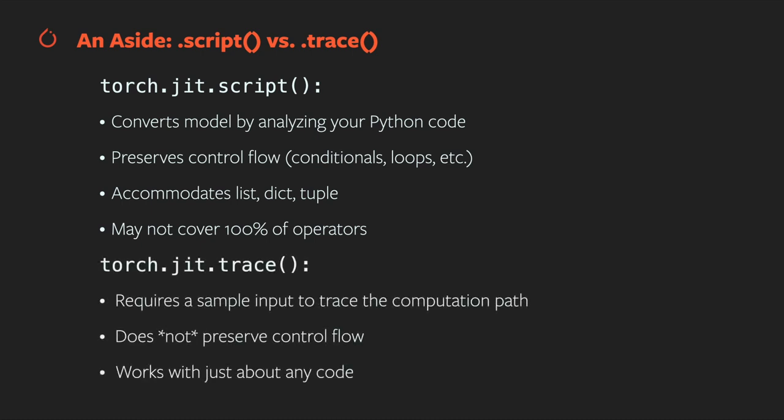torch.jit.trace takes a sample input and traces it through your computation graph to generate the TorchScript version of your model. This doesn't suffer the operator coverage limitations of torch.jit.script, but because it only traces a single path through your code, it won't respect conditionals or other control flow structures that might cause variable or non-deterministic runtime behavior. It's also possible to mix tracing and scripting when converting a model — see the documentation for torch.jit for notes on mixing the two techniques. It's worth looking at the docs to see optional arguments for checking the consistency and tolerances of your TorchScript model.